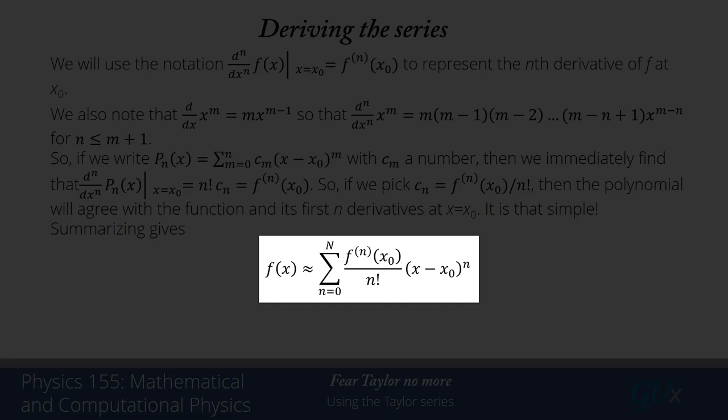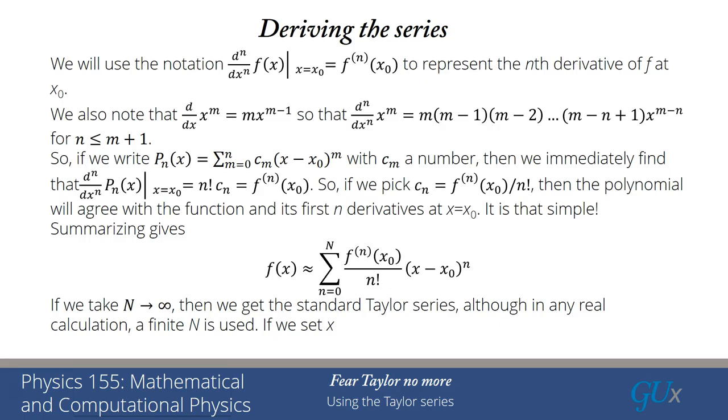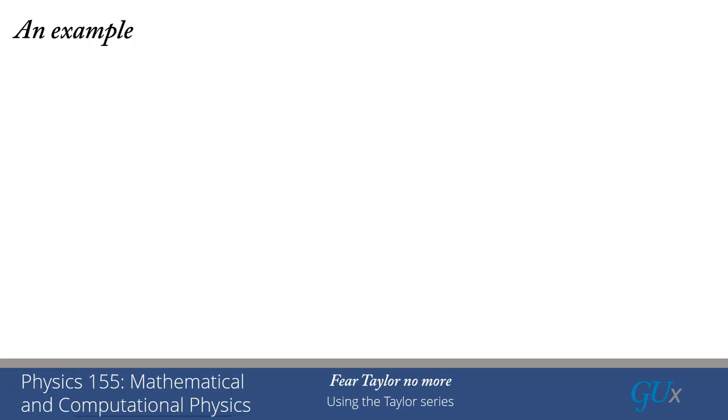So summarizing what we've learned is we can approximate f(x) by this polynomial that is a sum that goes to some integer big n and it is just the nth derivatives divided by n factorial multiplied by (x - x₀) to the nth power, and the sum of all of those terms is the polynomial that we're looking for. It's sometimes called a Taylor polynomial. If we take the limit n goes to infinity we get the standard form of the Taylor series, but you can only do that in any real calculation if that limit exists. So you have to carefully make sure that the limit exists, and then the reality is in almost any actual calculation where we work with a Taylor series, we work with a finite n. And the final point is that if we set x₀ equals to zero, then we get the MacLaurin series.